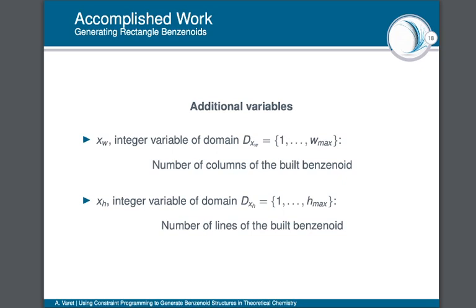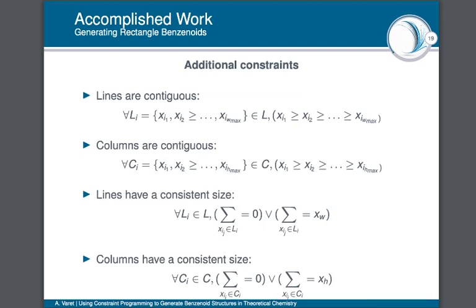We add two variables to the general model: XW with domain [1, Wmax] and XH with domain [1, Hmax], denoting the dimensions of the built benzenoid. About the constraints: lines and columns must be contiguous, so we specify that the value of a variable associated to a vertex of a line or column must be greater than or equal to the following element — we don't want a series of hexagons, then a hole, then another series. We also specify that if a line or column exists, its size must equal XH or XW respectively.